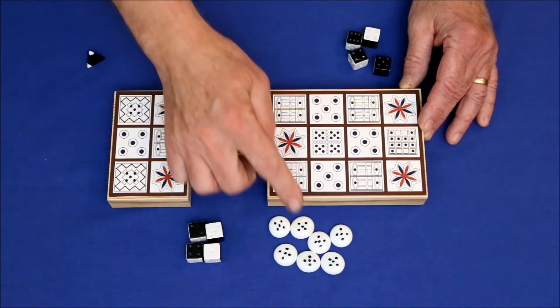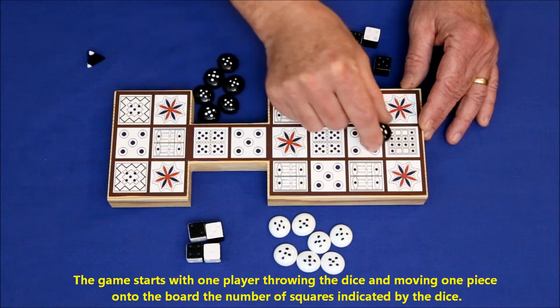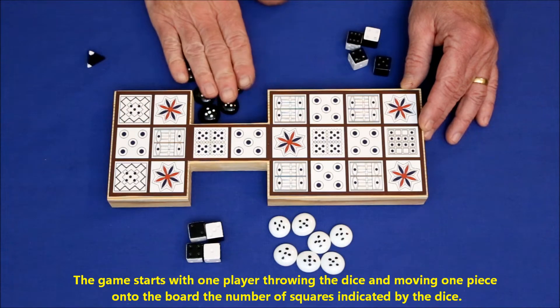The Game of Ur is a race game. Each of the two players has seven pieces, which are placed on the board and moved around until they exit. The first player with all of his pieces off wins.